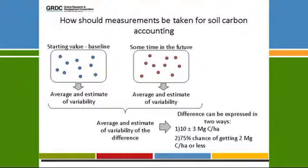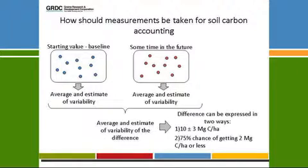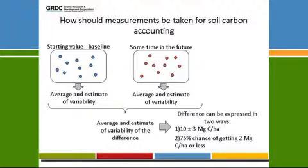If I use this white box as being a paddock, all those blue dots are, say, ten random positions where I've gone and sampled my soil. From those values, we can get the average and an estimate of the variability associated with the soil carbon content at that point in time — that's our baseline value. We do the same sometime in the future, again getting both the average and the estimate of variability. With those together, we can calculate the average and estimate the variability of the difference between them.